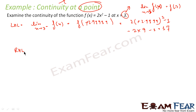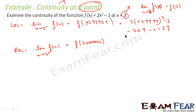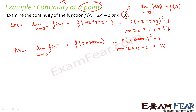Now let us find the right-hand limit. That is the limit of f(x) as x tends to 3 plus — a number just greater than 3. We take 3.001. So this becomes 2 into (3.001)² minus 1, which is almost equal to 2 into 9 minus 1, which is almost 17. So the left-hand limit and the right-hand limit are the same, and thus I can say the limit exists and has value 17.